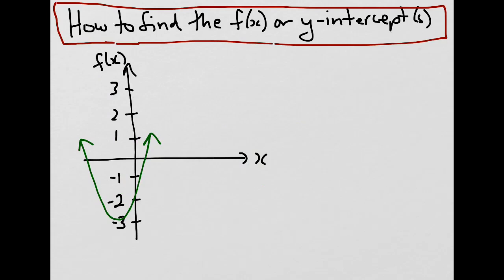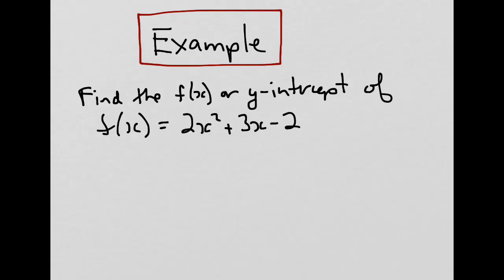In each case, you'll notice that x is always equal to 0 for an f(x) or y-intercept. And our intercept, in this case here, is the point with x-coordinate 0. So let's finish off by looking at an example.